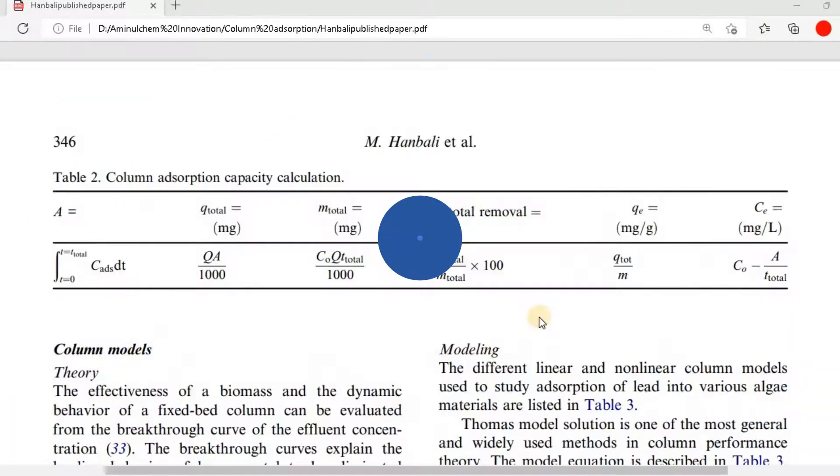In my previous videos, I showed how to determine various parameters for column adsorption, where I mentioned Q total equal to QA divided by 1000, where A is the area underneath breakthrough curve.